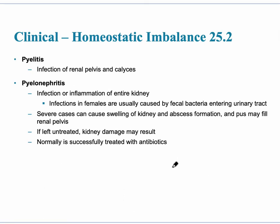A couple of homeostatic imbalances that apply to the kidney are pyelitis — an infection of the renal pelvis and the calyces — and pyelonephritis. This can be very serious if kidney damage occurs, and may lead to a drop in red blood cells, which relates to hematocrit.